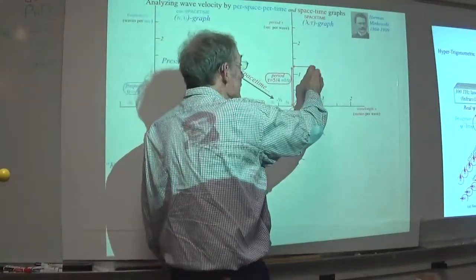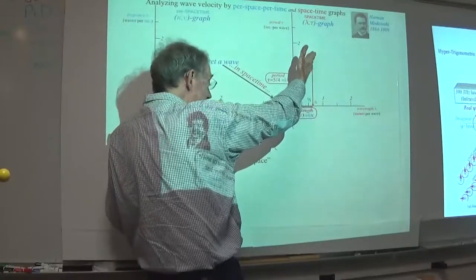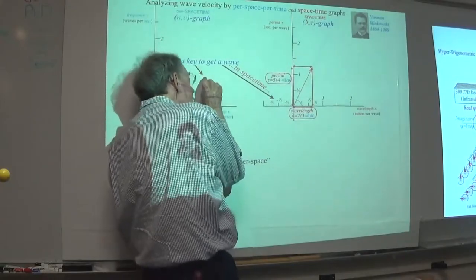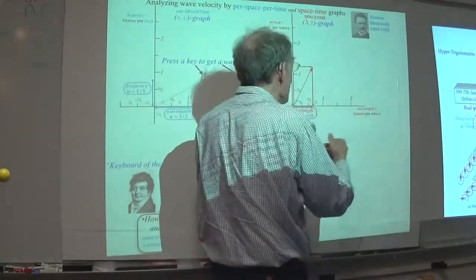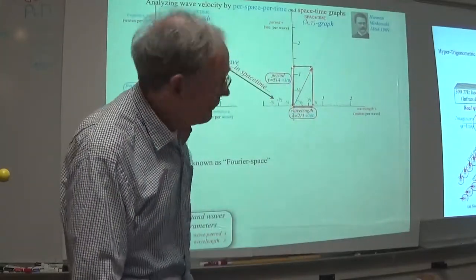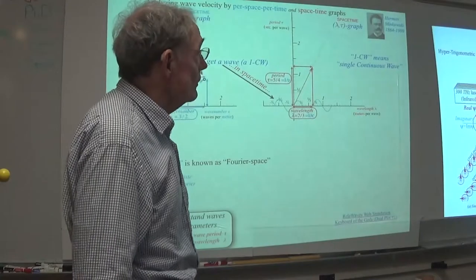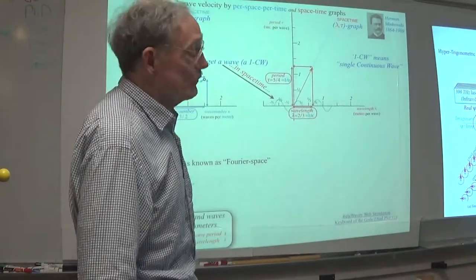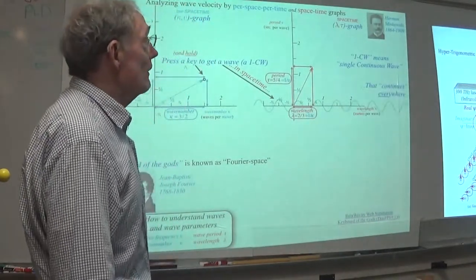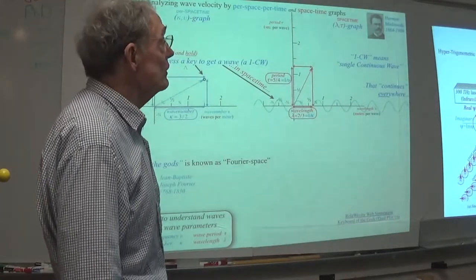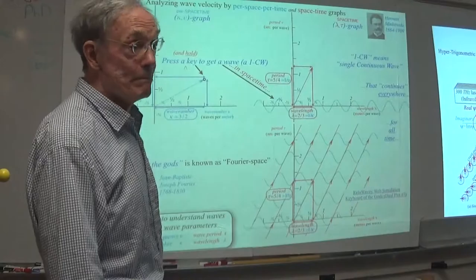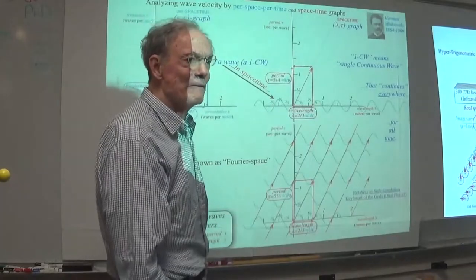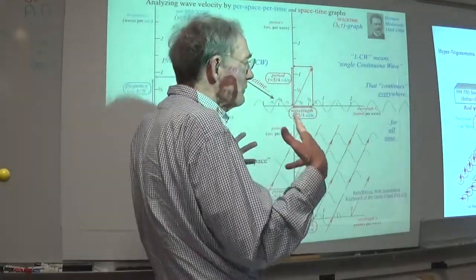When I push this one button here, I cover this space with a wave that has these numbers. I make a thing called a continuous wave, a single wave - a 1CW, that's the laser jock's terminology. The idea is that it is continuous: it continues everywhere and for all time. Literally, you cover the whole universe by pushing this button. I told you this was the keyboard of the gods. So we're making mathematical fictions here - this has a complete, total, infinite uncertainty in space and time, and it's one point right here.